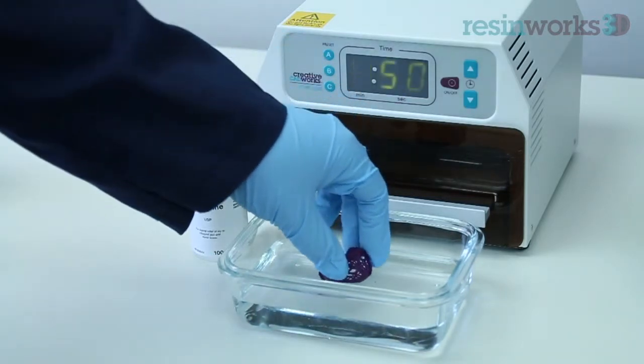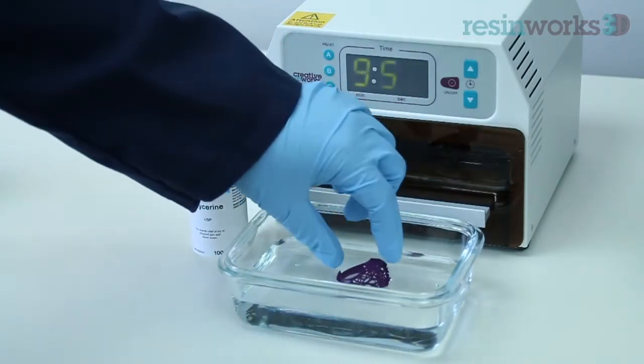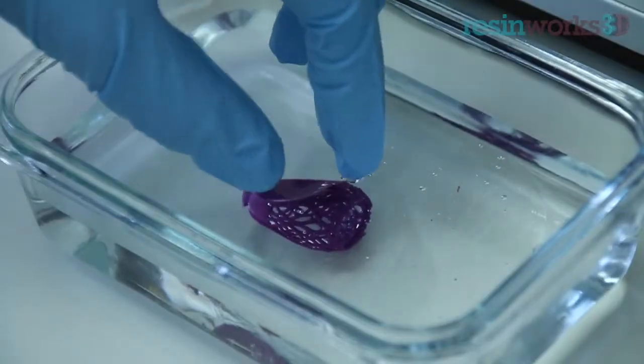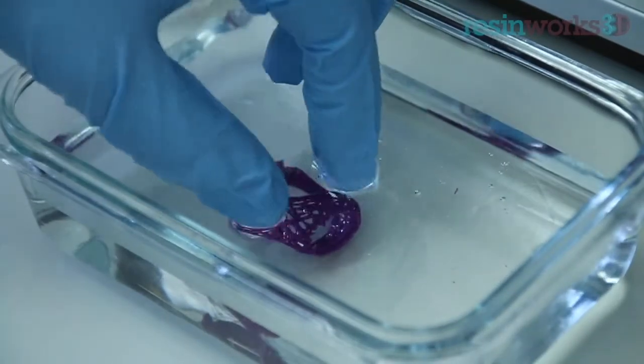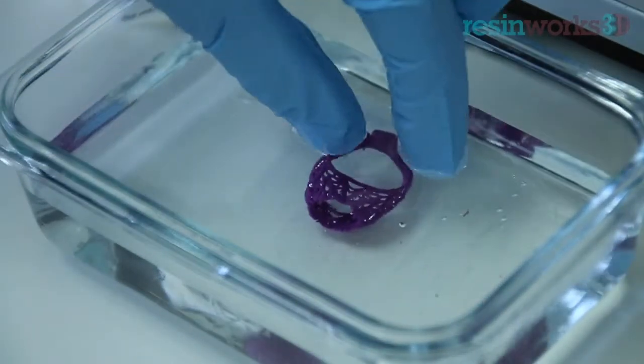Make sure your model is fully submerged. Use your fingers to push the model to the bottom of the bowl. You want the model to be cured with glycerin covering the entire surface of the model.